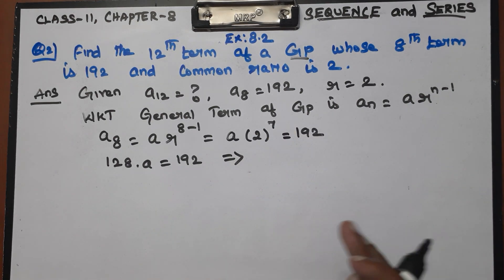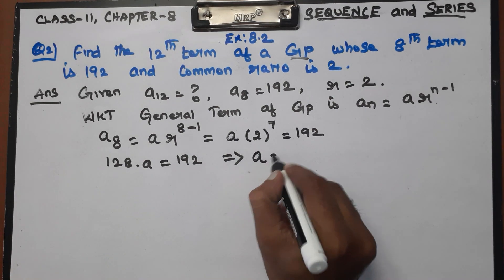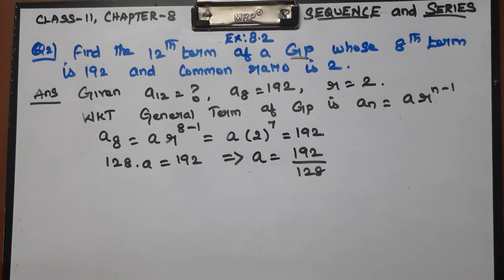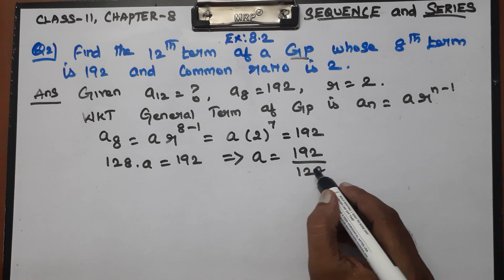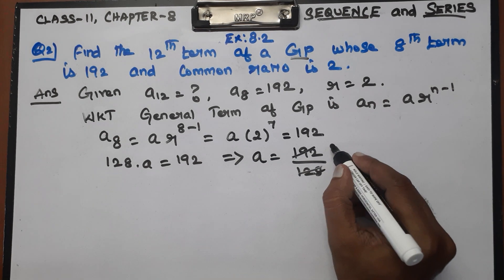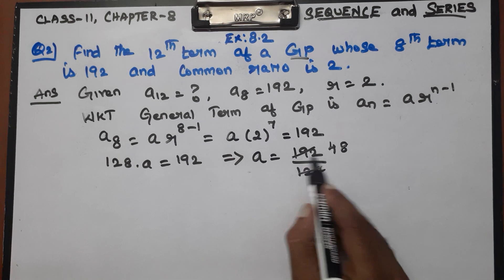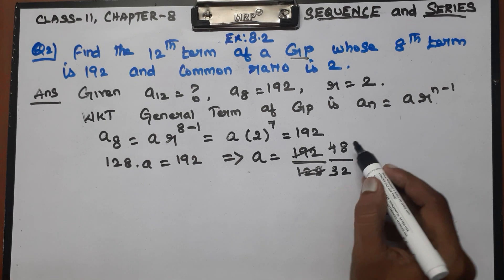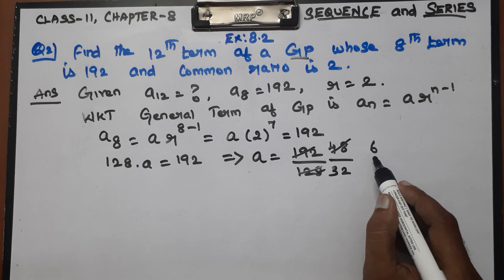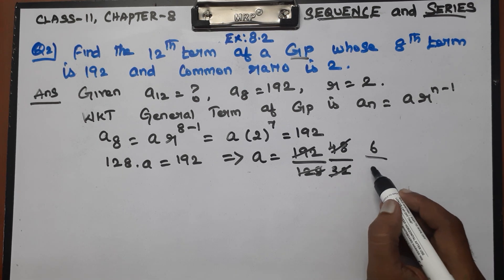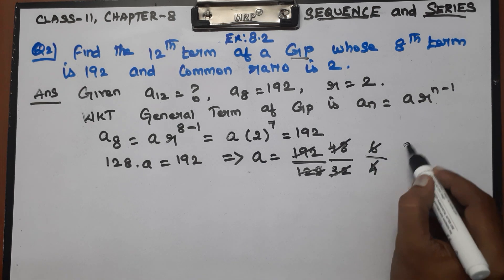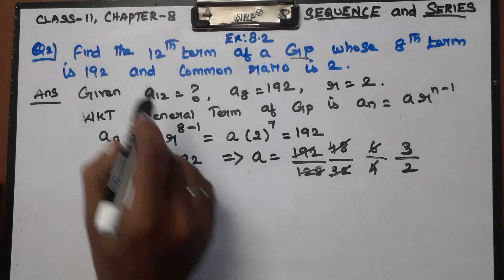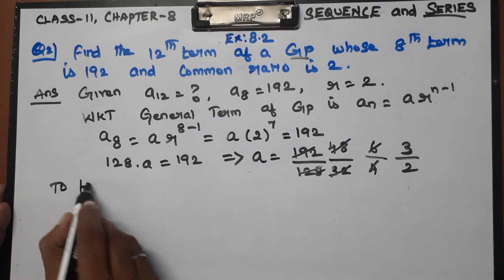2 × 2 × 2 ... seven times equals 128. So a = 192 divided by 128. Dividing: 4's into 16, 4 × 8 = 32, 4 × 3 = 12, 4 × 2 = 8. Simplifying further, cancel to get 3/2. So the value of a is 3/2.